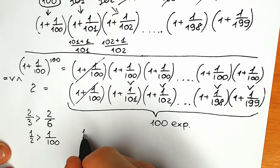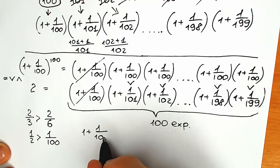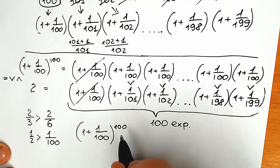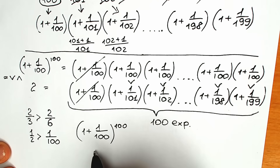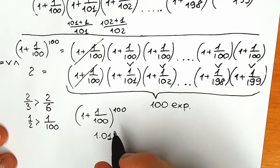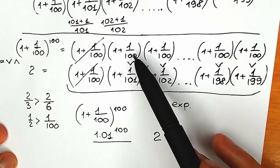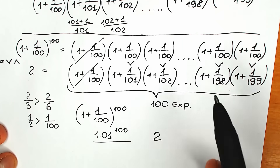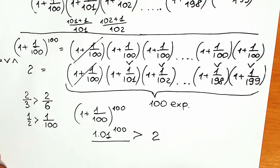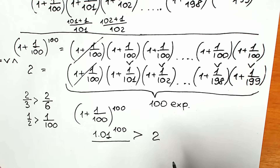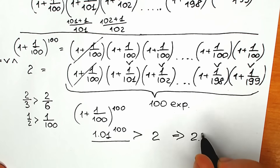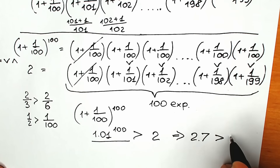So let's write our final answer. We have 1.01 to the power 100, which is greater than 2. The exact value of 1.01 to the power 100 is approximately 2.7, and of course 2.7 is greater than 2.